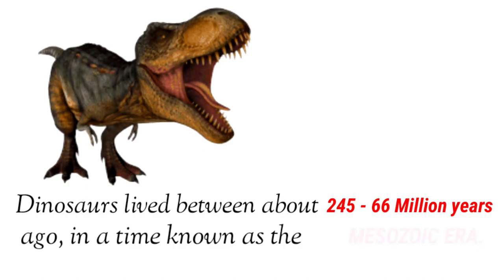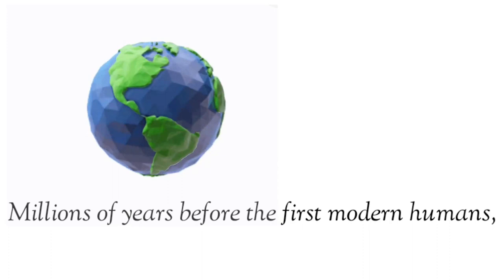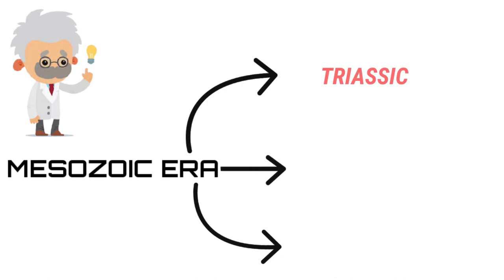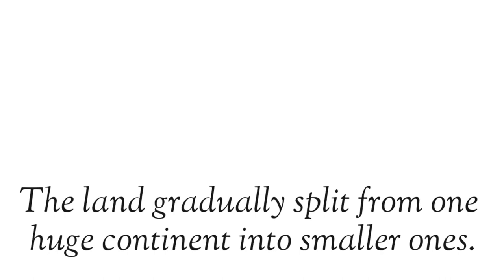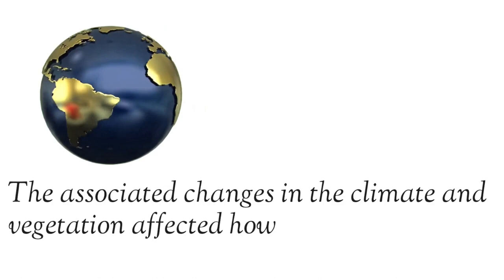Dinosaurs lived about 245 to 66 million years ago in a time known as the Mesozoic era. This was many millions of years before the first modern humans, Homo sapiens, appeared. Scientists divided the Mesozoic era into three periods: the Triassic, the Jurassic, and the Cretaceous. During this era, the land gradually split from one huge continent into smaller ones, and the associated changes in the climate and vegetation affected how dinosaurs evolved.